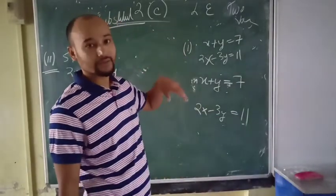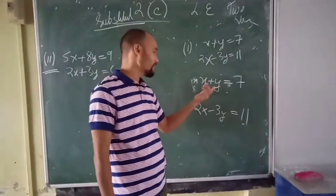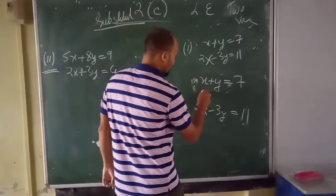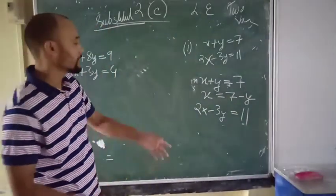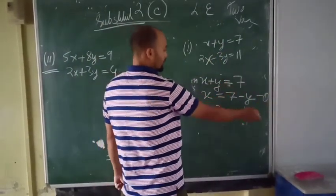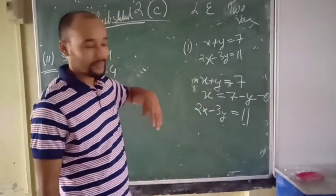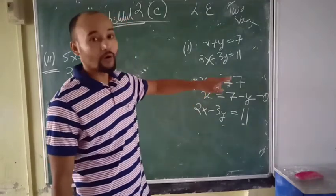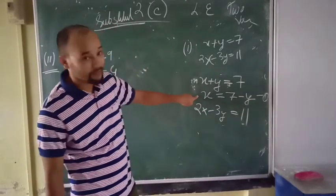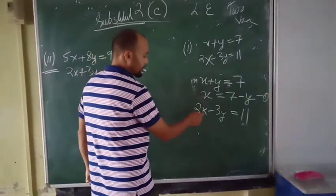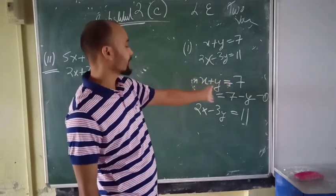Using the substitution method — from equation 1, x plus y equals 7, since x and y values are unknown, we consider the value of x from this equation. If we take x, then x equals 7 minus y. Whether you choose x or y, the same answer will come out. It is up to you.